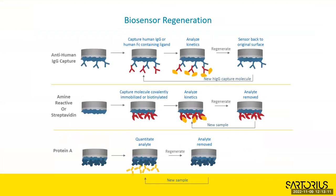One of the most common questions is whether biosensors can be used more than once. The answer is it depends. Some biosensors can be regenerated multiple times. With protein A, for instance, you bind the Fc region of antibodies to the sensor. If you dip it into acid, it strips away all the antibodies, leaving a blank sensor. You can reuse it up to 10 times, so you can do a whole 96-well plate with just eight sensors.